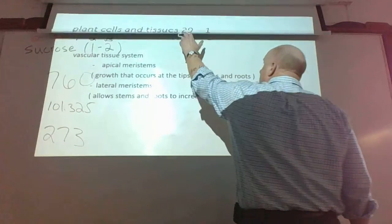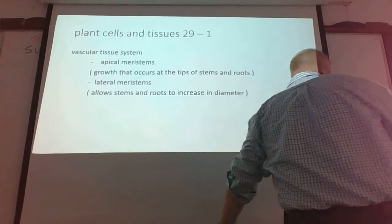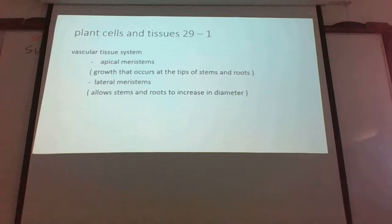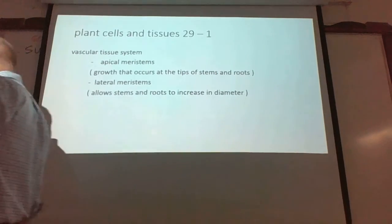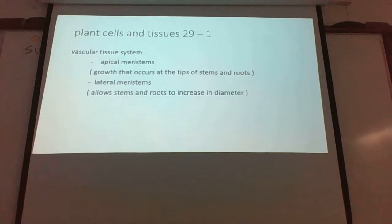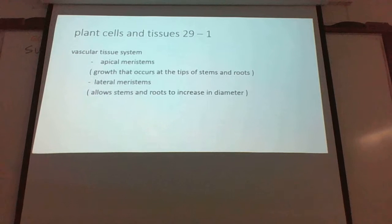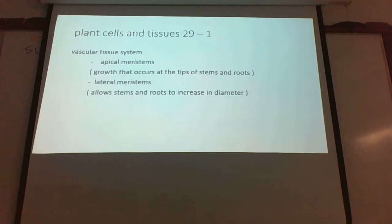Yesterday we left off talking about the three different types of cells in plants. The main idea was parenchyma, colenchyma, and sclerenchyma. Keep your P's together: parenchyma deals with metabolic functions, more commonly in the leaves, and keep your P's together with photosynthesis.